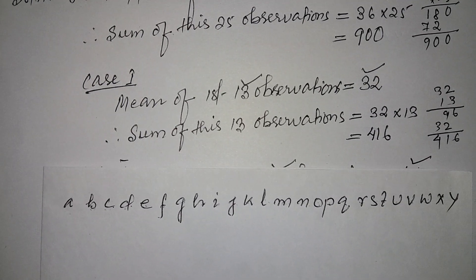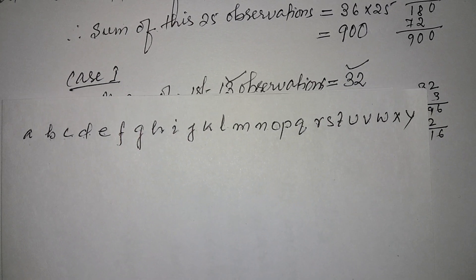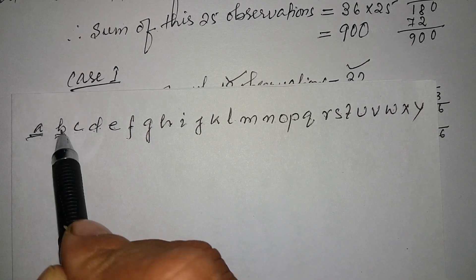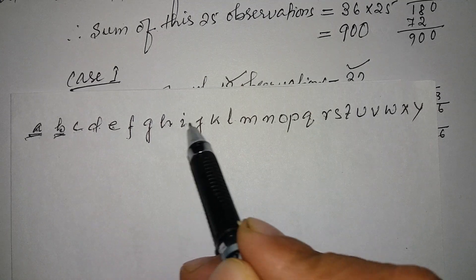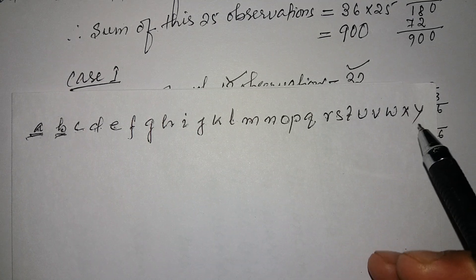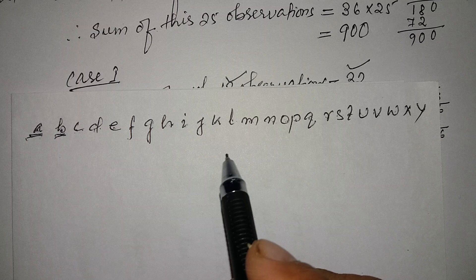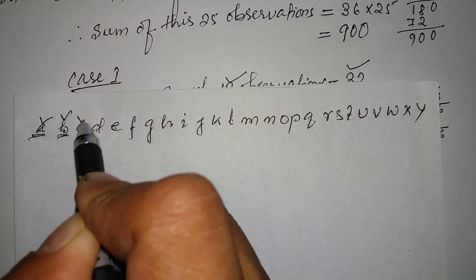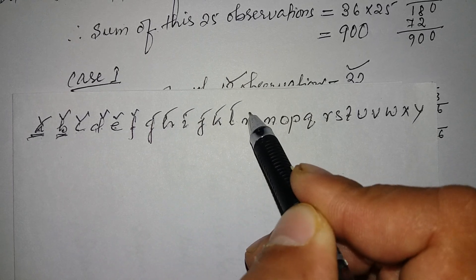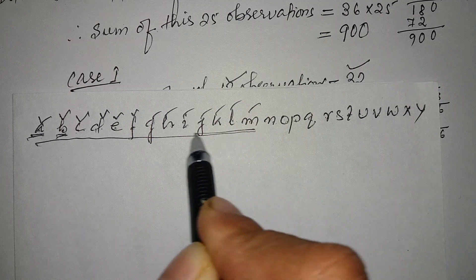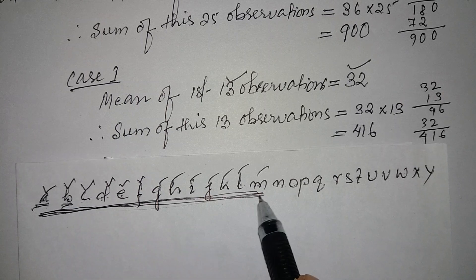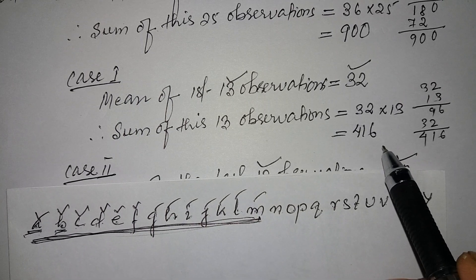Now, we have 25 observations total. When we say sum of the first 13 observations, it means observations 1 through 13. The mean of these observations being given, we have found out the sum of these 13 observations, which is 416.